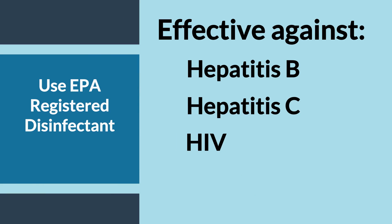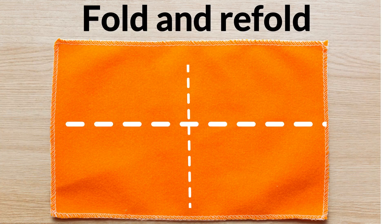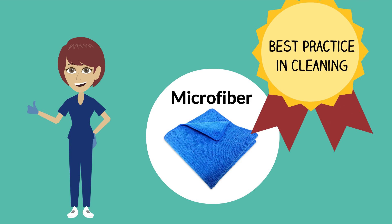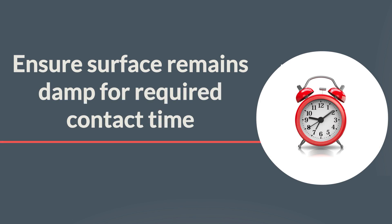Next, use an EPA-registered hospital disinfectant labeled as effective against hepatitis B, hepatitis C, and HIV to clean and disinfect surfaces. Most are combination products that include a detergent cleaner and a disinfectant chemical. When using concentrated disinfectant, the solution should be mixed fresh each shift and used in accordance with the manufacturer's directions. Fold and refold reusable cleaning cloths during the cleaning process to reduce cross-contamination. Studies have shown that microfiber cleaning textiles are more effective than cotton textiles at removing contaminants and are considered a best practice in cleaning. Apply friction when cleaning or disinfecting and ensure the surface remains damp for the contact time required on the product label to effectively kill pathogens.